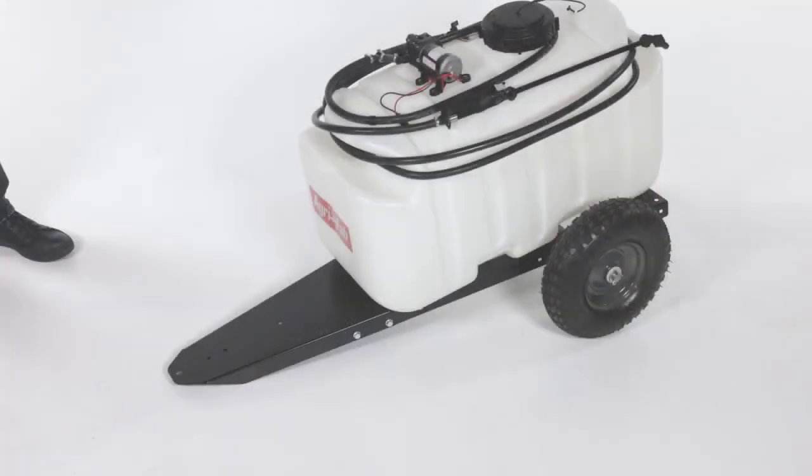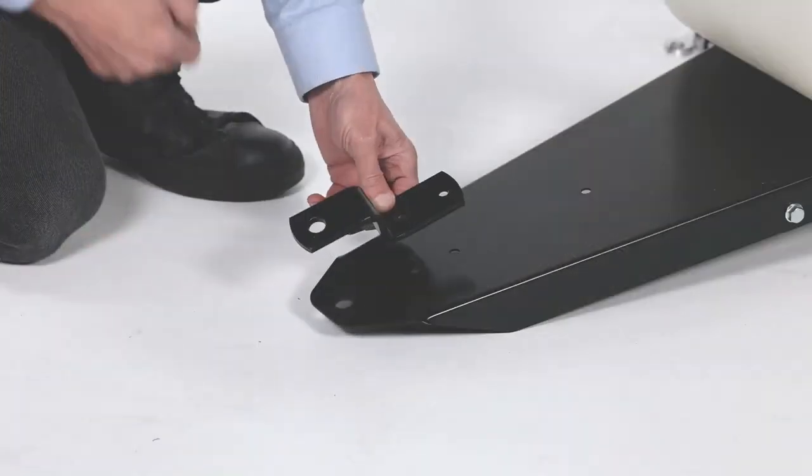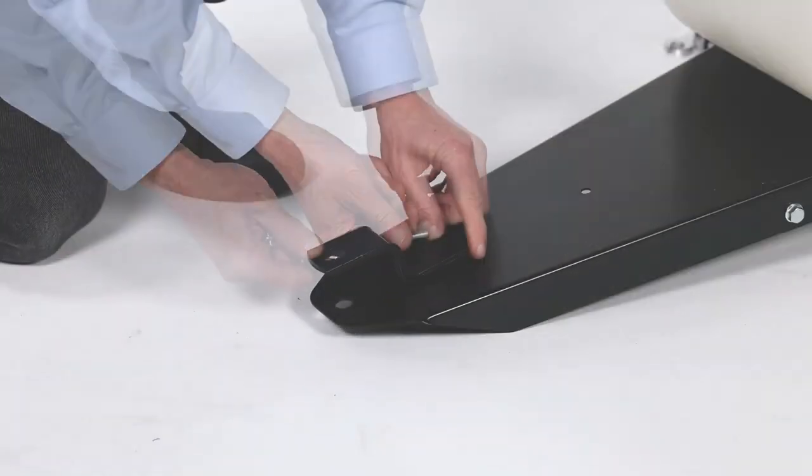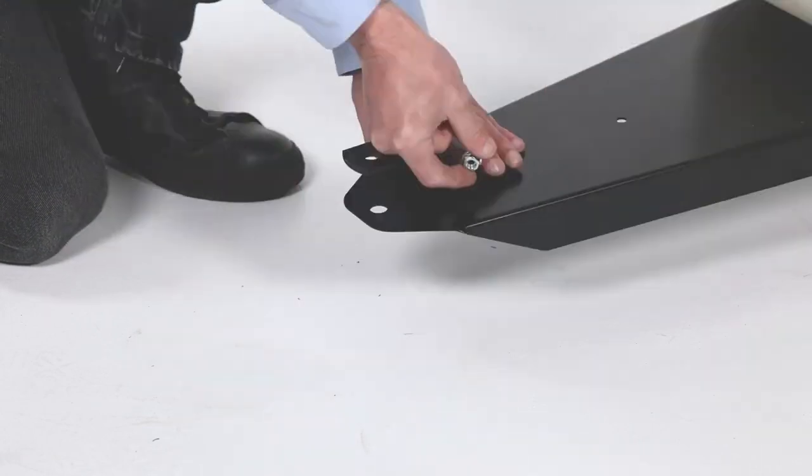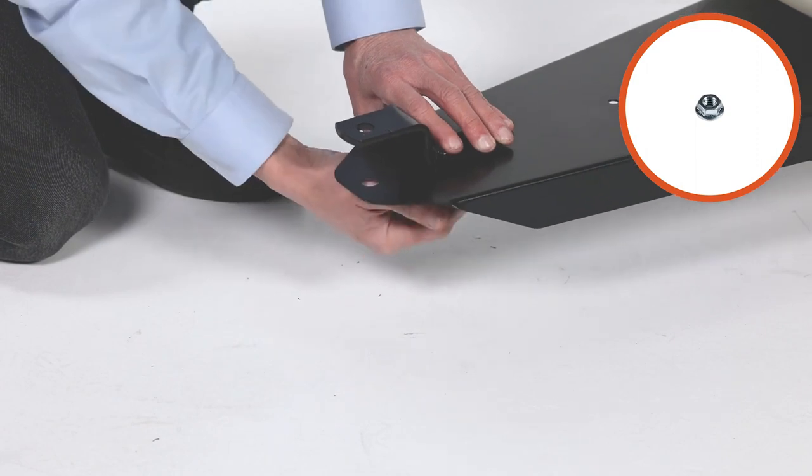Next, turn the sprayer onto its wheels, then align the hitch bracket, Part 7, and fully secure it with 2 5/16 inch by 3/4-inch flange bolts, Part A, and 2 5/16 inch whizlock nuts, Part C.